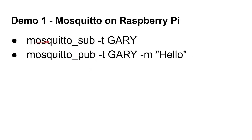We're going to have three windows open: one for the server, one for the subscriber, and one for the publisher. The subscriber says it's interested in anything under the topic 'Gary,' using minus-T for topic. Then we're going to publish on the topic 'Gary' the message 'hello,' and we'll see that it goes through the server and arrives at the subscriber. Let's switch over to the Raspberry Pi and do that now.